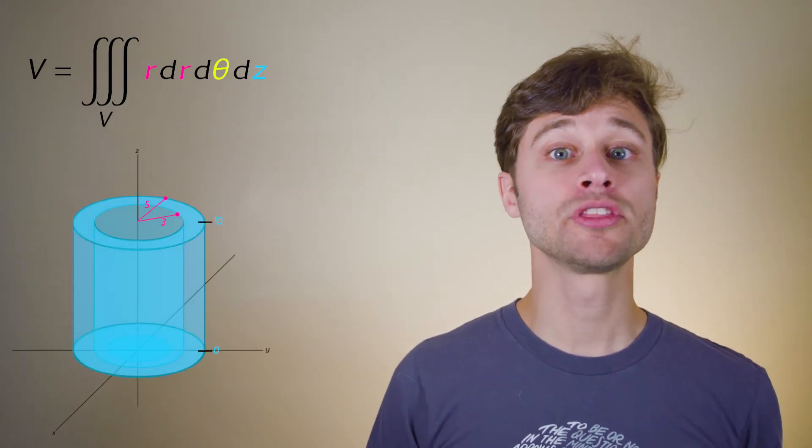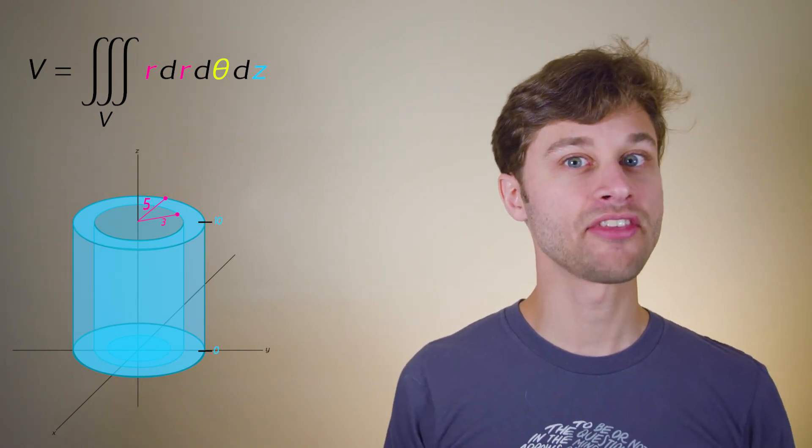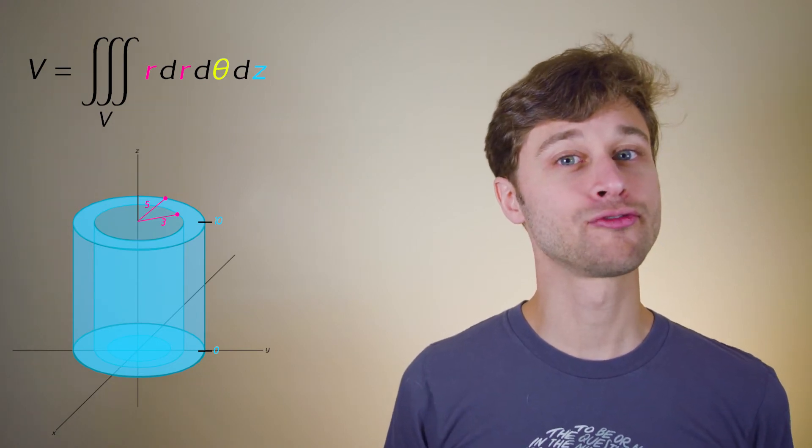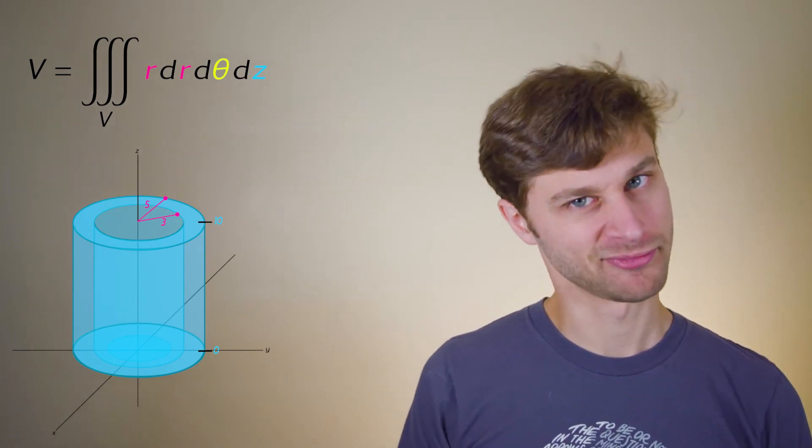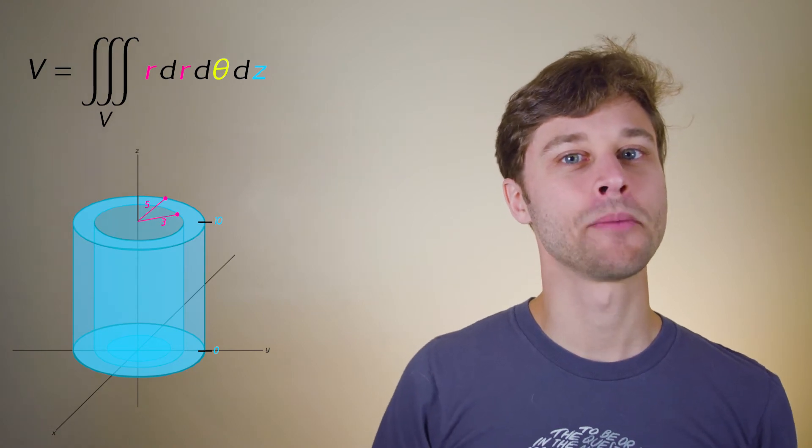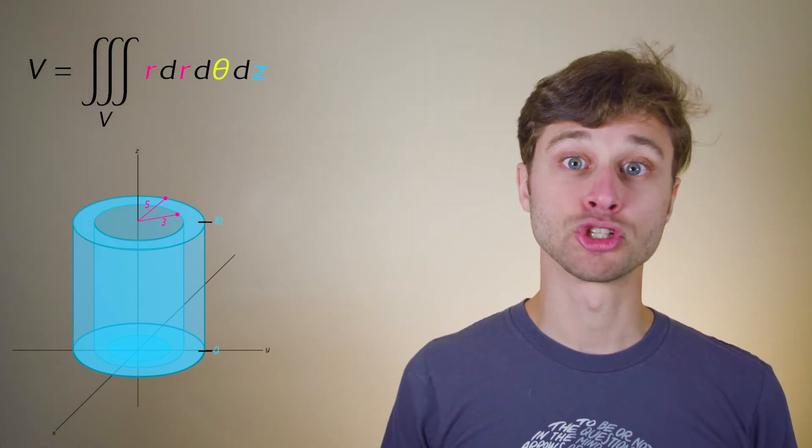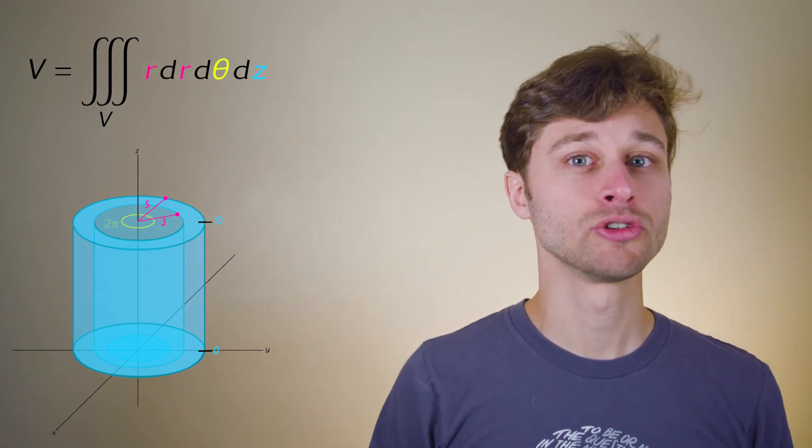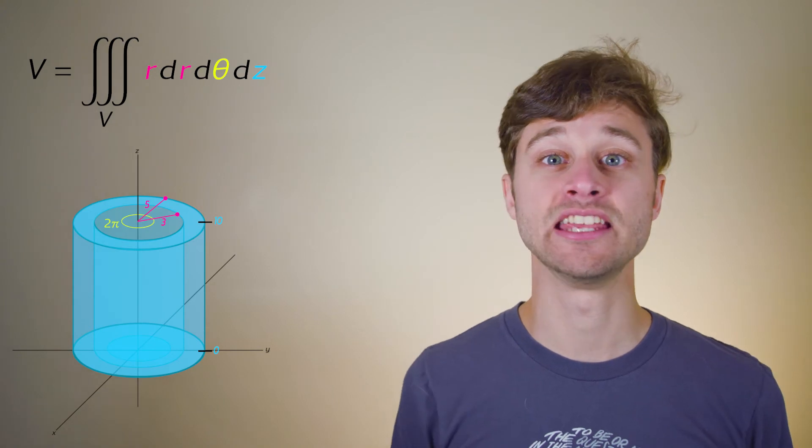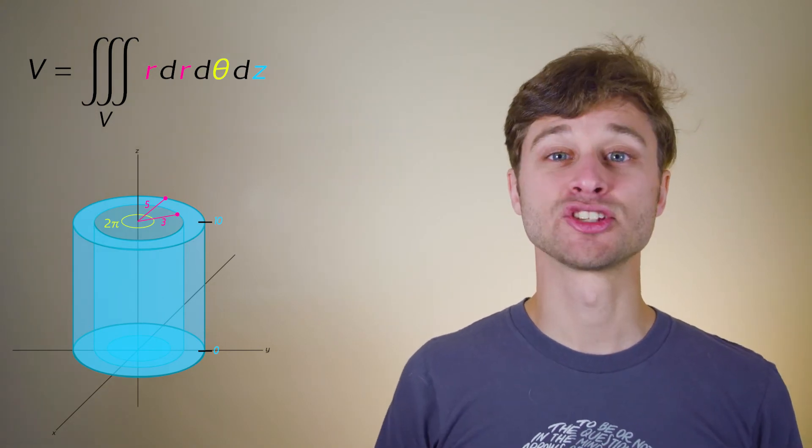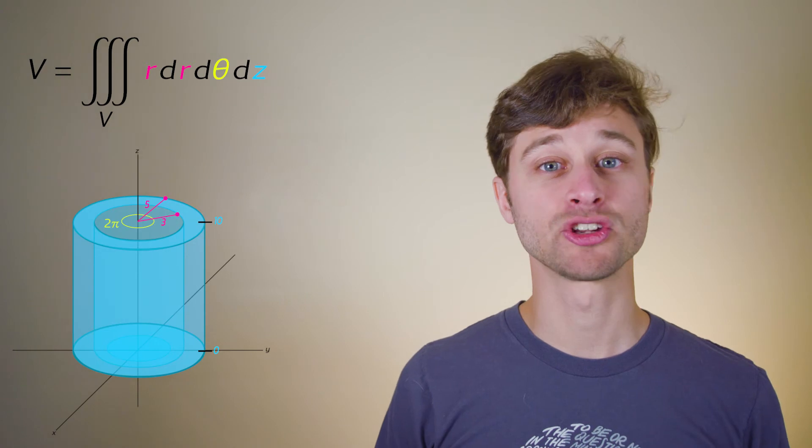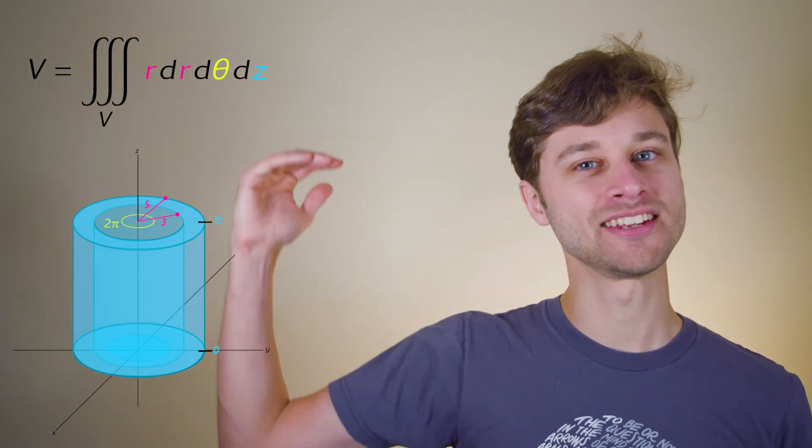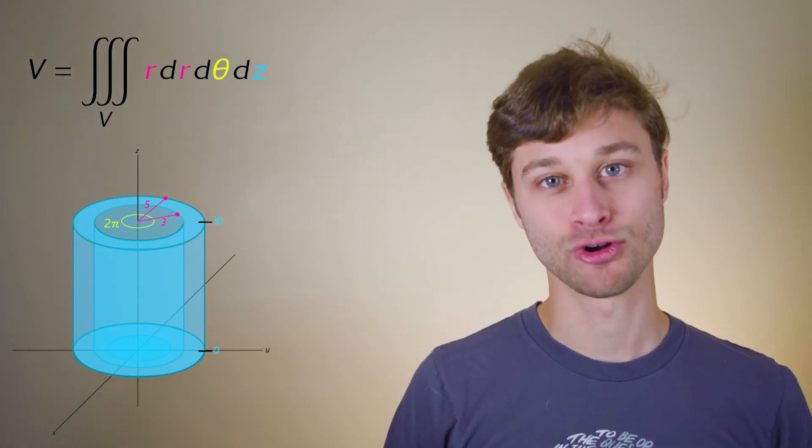Let's start with r. We know that the maximum value of r is 5, and that the thickness of this sheath is 2. So therefore, we are going from a value of r is equal to 3, 5 minus 2, and going to a maximum value of r equal to 5. Now let's look at theta. Theta we are integrating all the way around this cylinder, so we are going to go from a theta equal to 0 to a theta equal to 2 pi. Finally, let's look at z. Our limits of integration for z correspond to the length of this cylinder, so going from z is equal to 0 all the way to z is equal to 10 should give us our limits of integration for z.